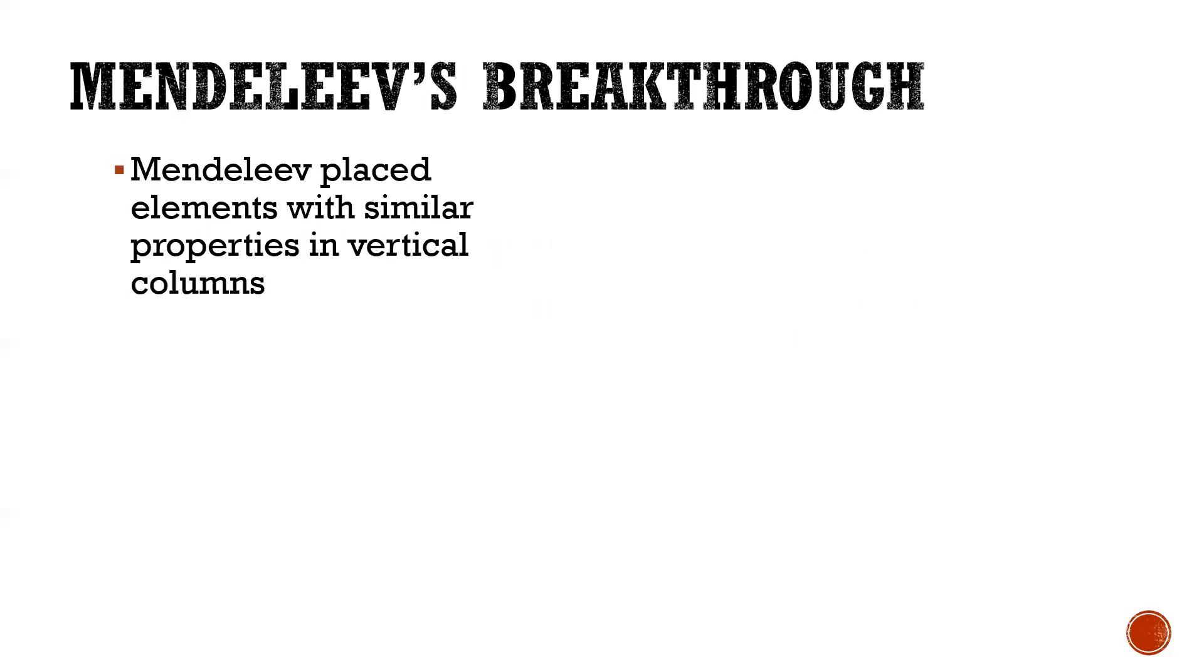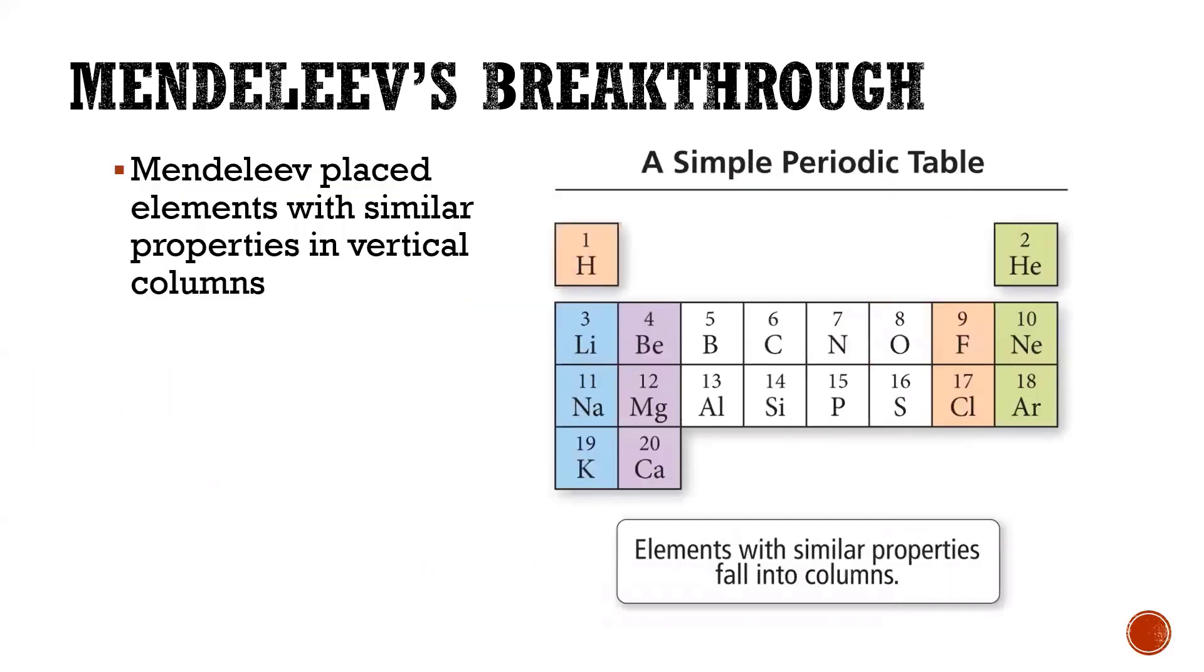So what he did instead was instead of doing one long row he started to stack the properties of elements in what are referred to as columns or we'll call them as groups. He left blank spaces for any elements that hadn't been discovered but he thought should exist in the future.